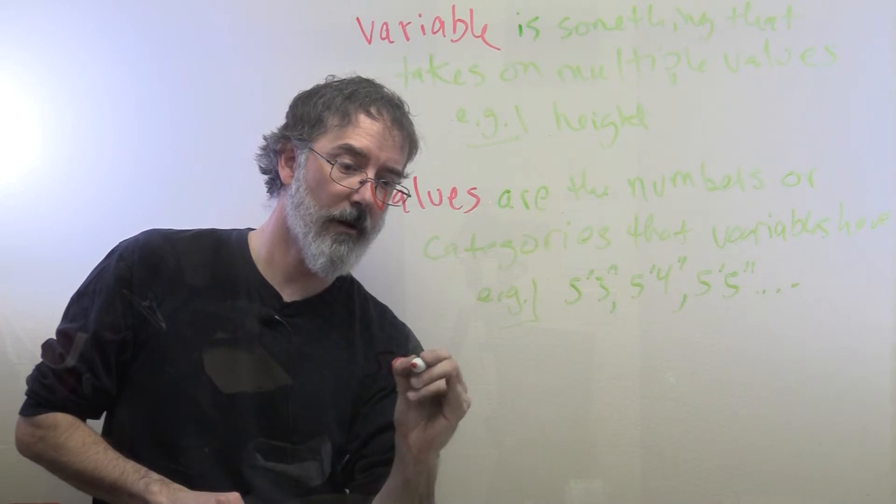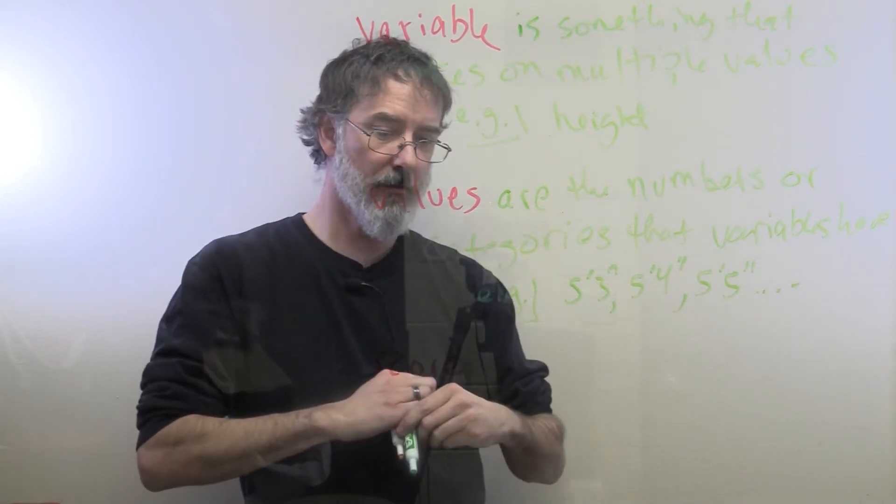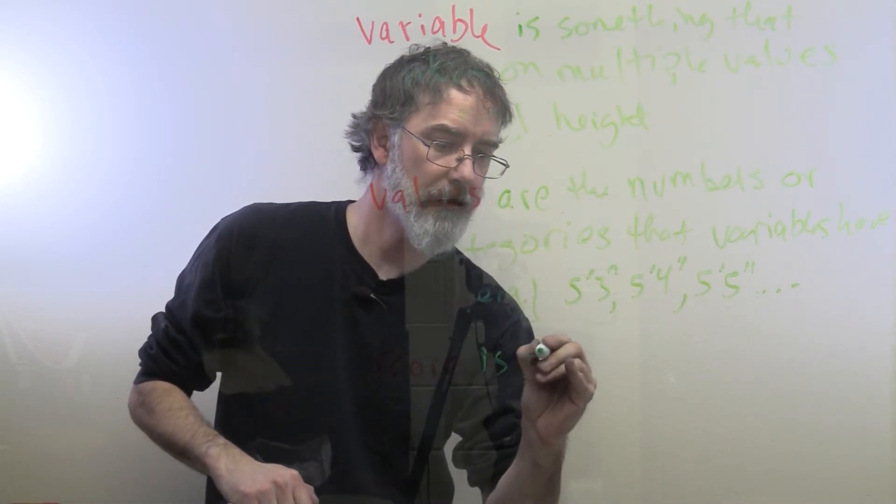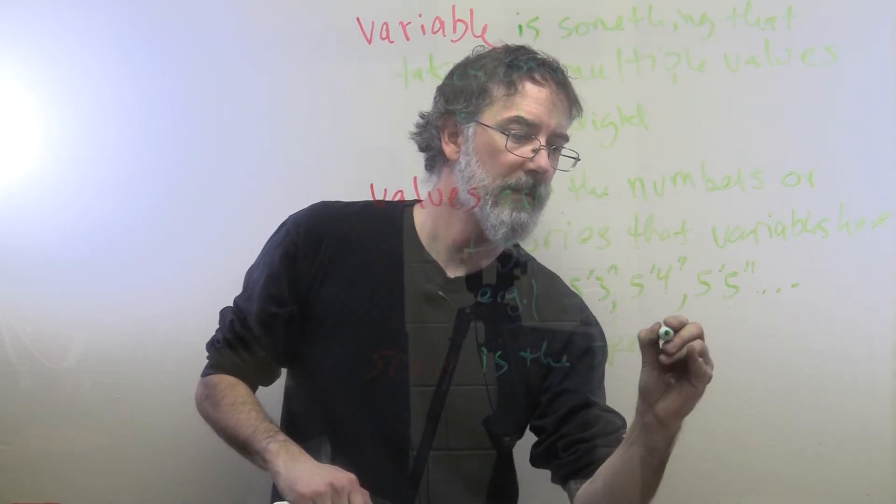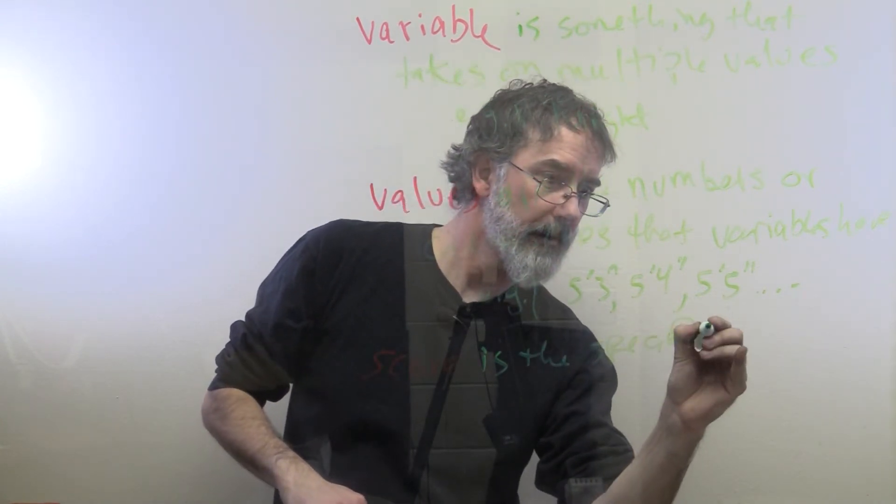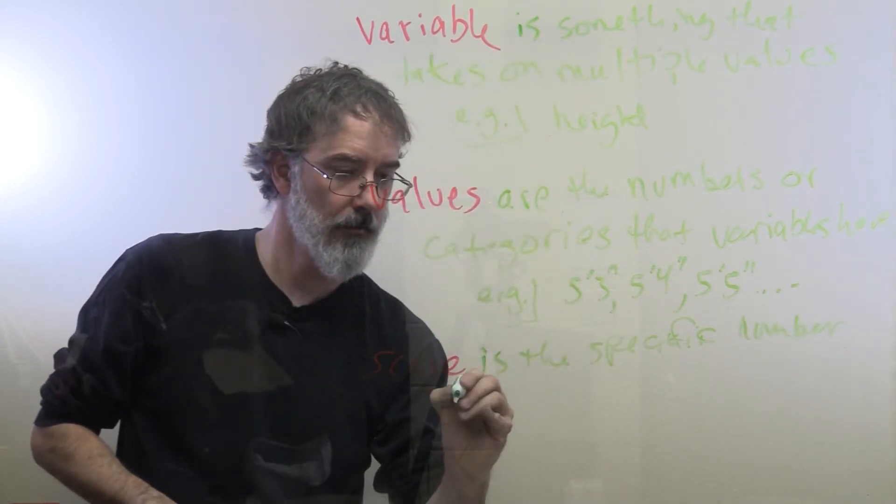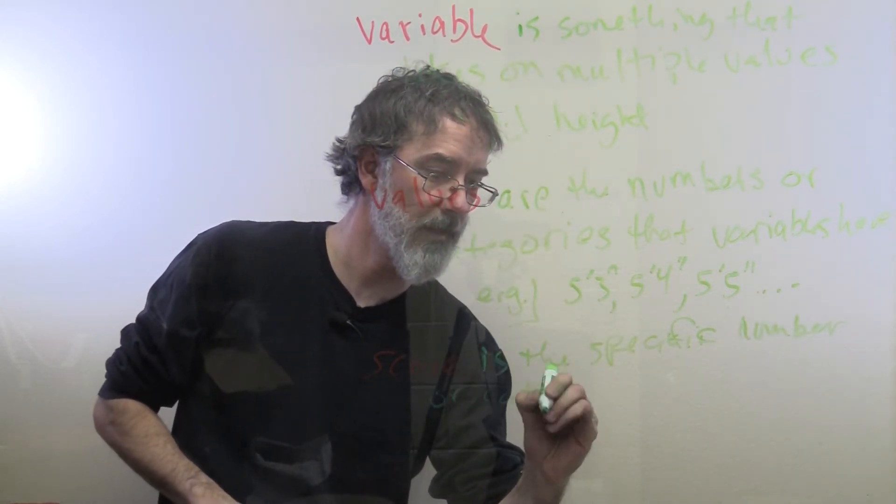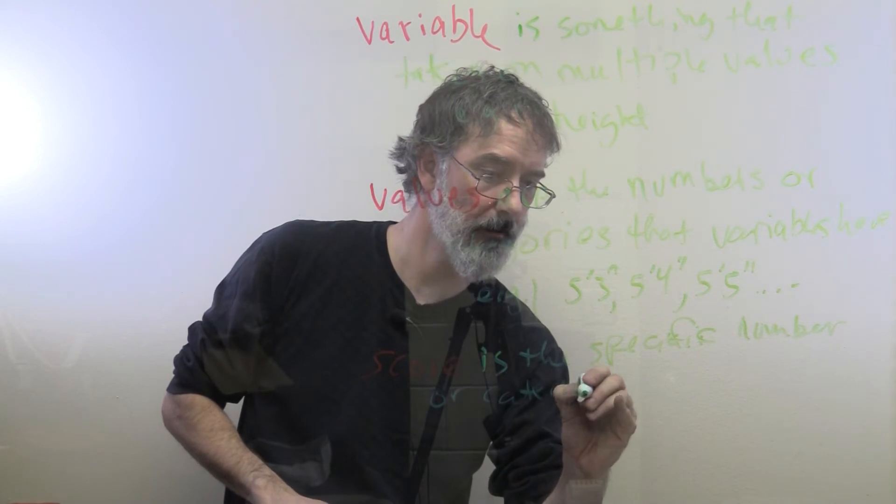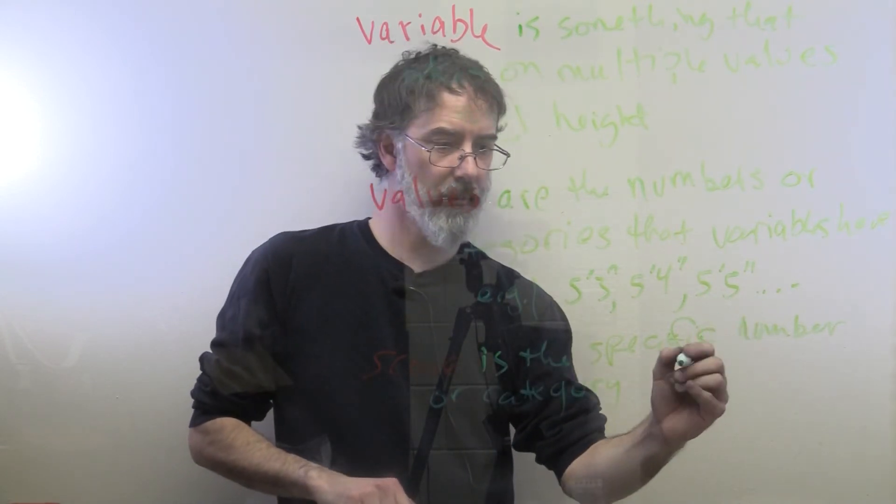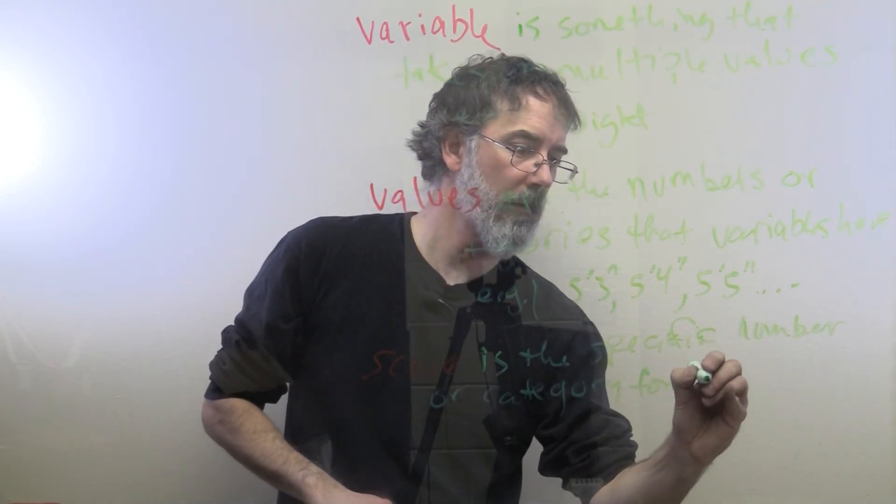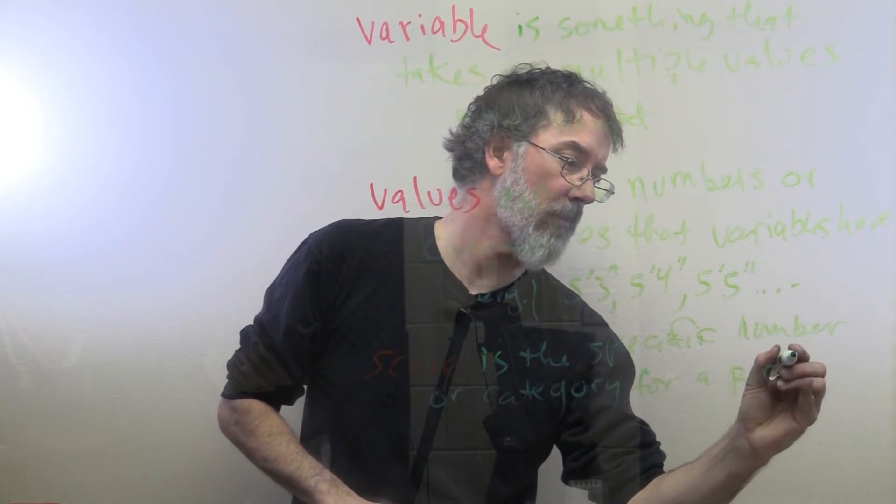each woman would have a score. The score is the specific number, or potentially category—man versus woman, for example. It is a specific number or category for a person, or more generally for an observation.